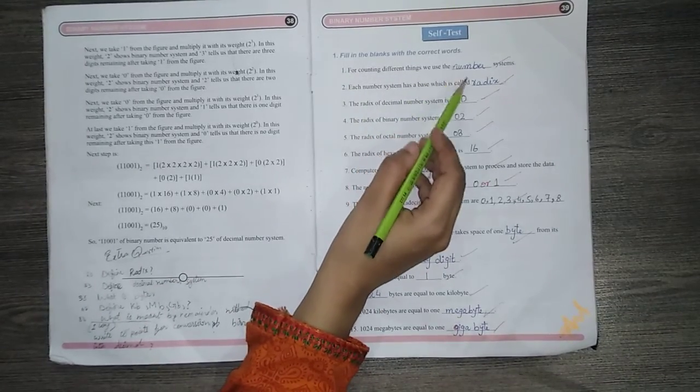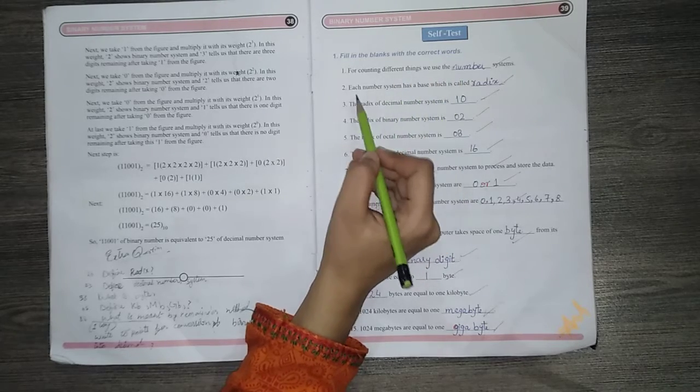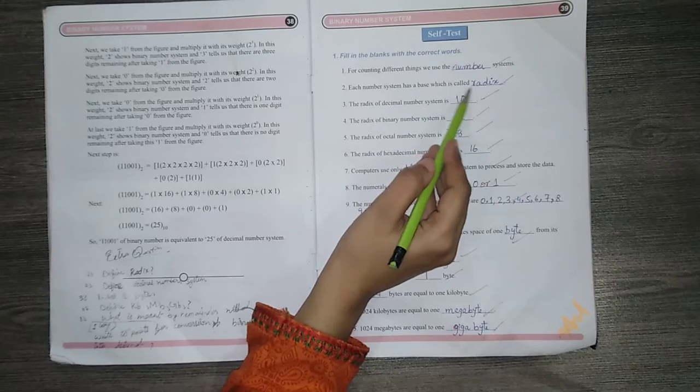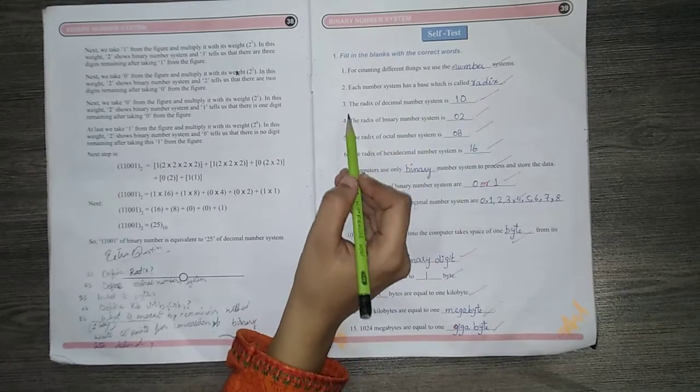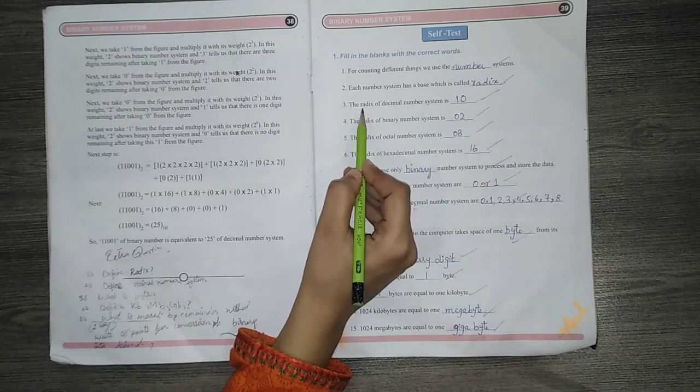For counting different things we use the number system. Each number system has a base. Number 3, the radix of a decimal number system is 10. Radix means base.